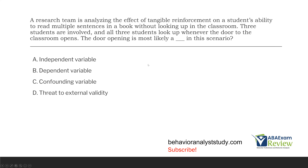It's creating chaos and confusion in the experiment. The door opening is not our independent variable because we are not manipulating it — we're looking at the effects of a tangible reinforcer. It isn't our dependent variable either. It's a confounding variable. It isn't a threat to external validity because external validity is about generalization; here we're talking about internal validity. The door opening is most likely a confound in this scenario.